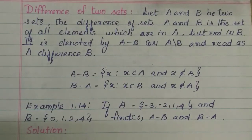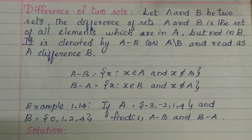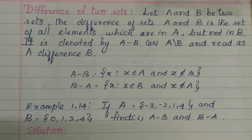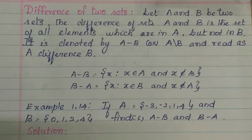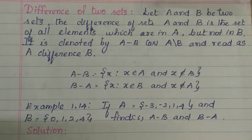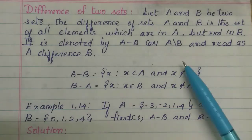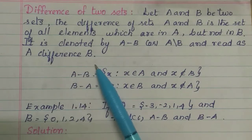Hi students. In this video we will see the difference of two sets. Let A and B be two sets. The difference of sets A and B is the set of all elements which are in A but not in B. It is denoted by A minus B or A slash B and read as A difference B.